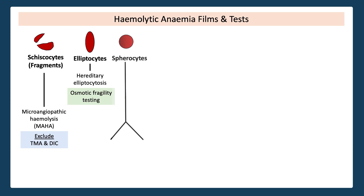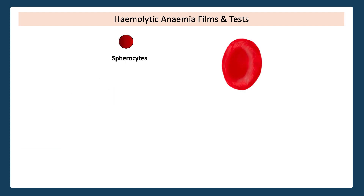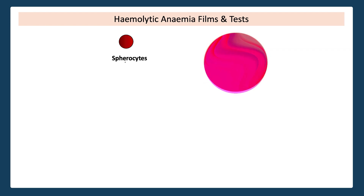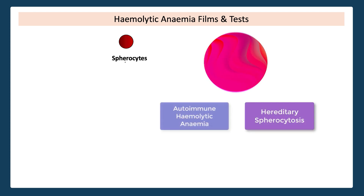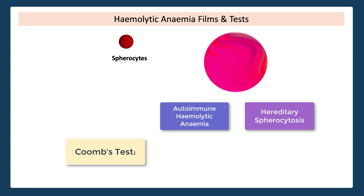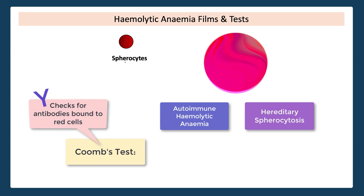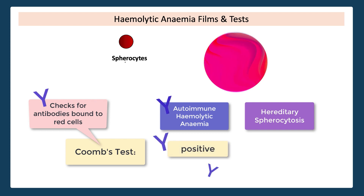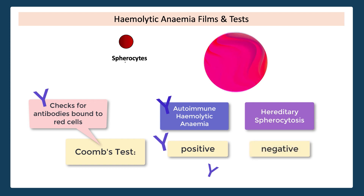Next up is spherocytes. If you can imagine the red cell is normally a biconcave disc, a spherocyte is like a little ball. Spherocytes can be found in two main scenarios: hereditary spherocytosis or autoimmune hemolytic anemia. We can delineate between these pathologies using the Coombs test. The Coombs test is really just asking ourselves: is there an antibody stuck to this red cell or not? If the answer is yes, you'll have a positive Coombs test and you're dealing with autoimmune hemolytic anemia. If the answer is no, it's a negative Coombs test and you're now in the hereditary spherocytosis category.